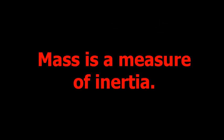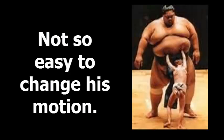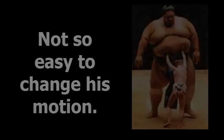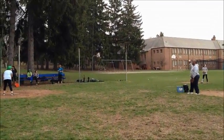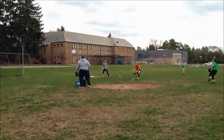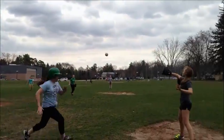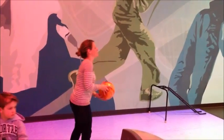Mass is a measure of inertia. An object that has a small mass has less inertia than an object that has a large mass, so changing the motion of an object with a small mass is easier than changing the motion of an object with a large mass. For example, a softball has less mass and therefore less inertia than a bowling ball. Because the softball has a small amount of inertia, it is easy to pitch the softball and change its motion by hitting it with a bat. Imagine how difficult it would be to play softball with a bowling ball.